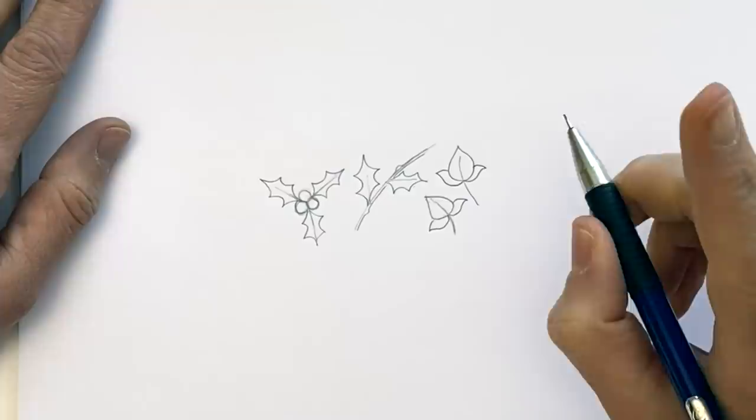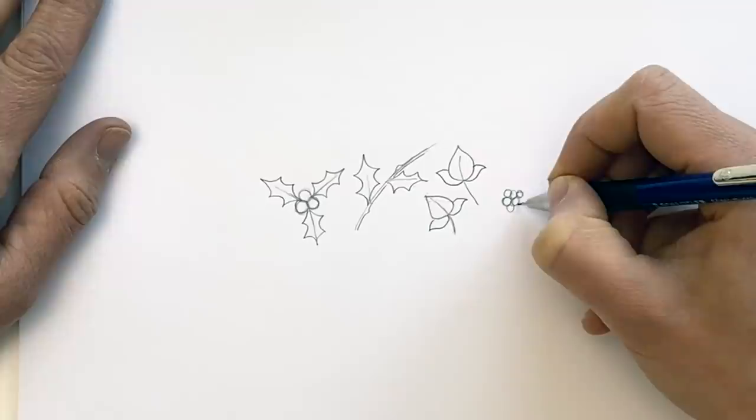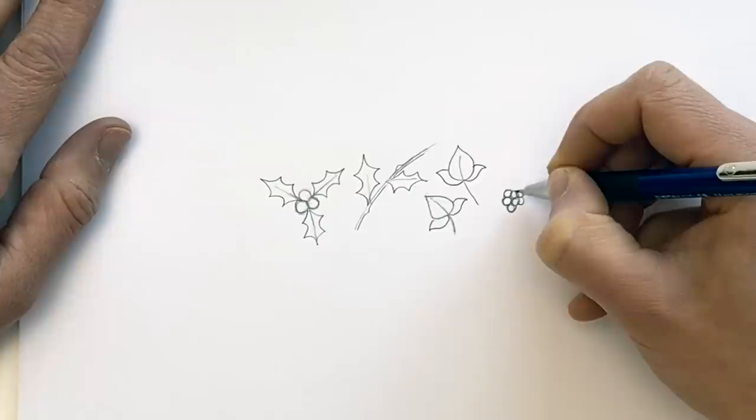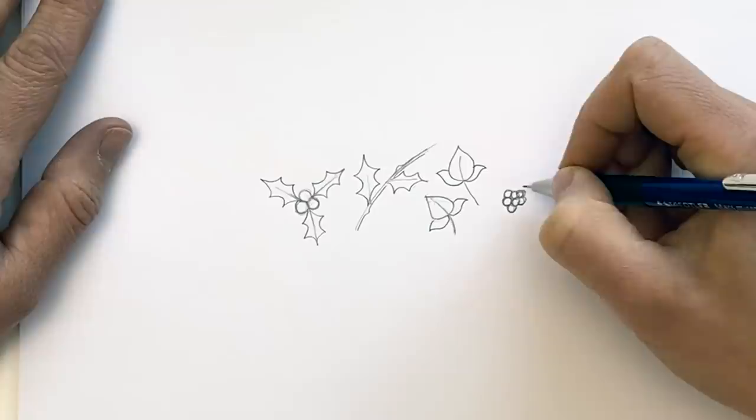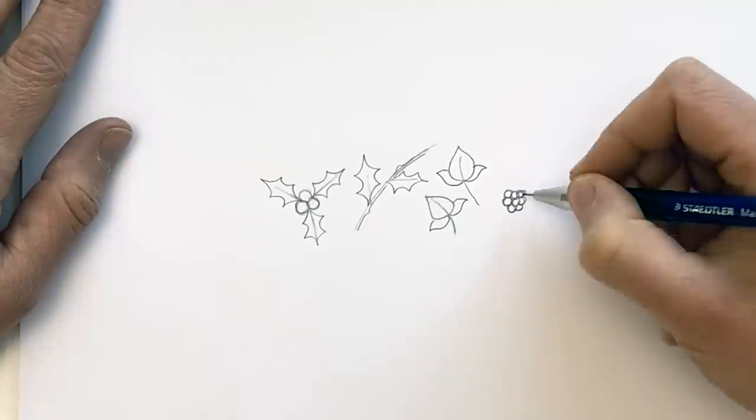Next up, holly ivy mistletoe. So again, like the holly, I draw the berries first. I cannot imagine drawing the foliage first. It would be like drinking cup of soup from a bowl. Just wrong. Cup of soup should be in a cup or a mug for that matter, but not in a bowl. Berries first is what I'm saying. So I've done a little cluster of berries there. It actually almost looks like it could be a raspberry.